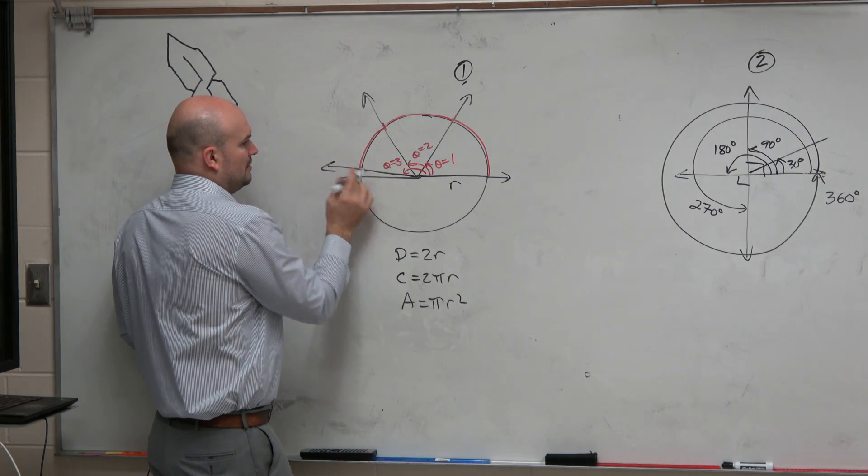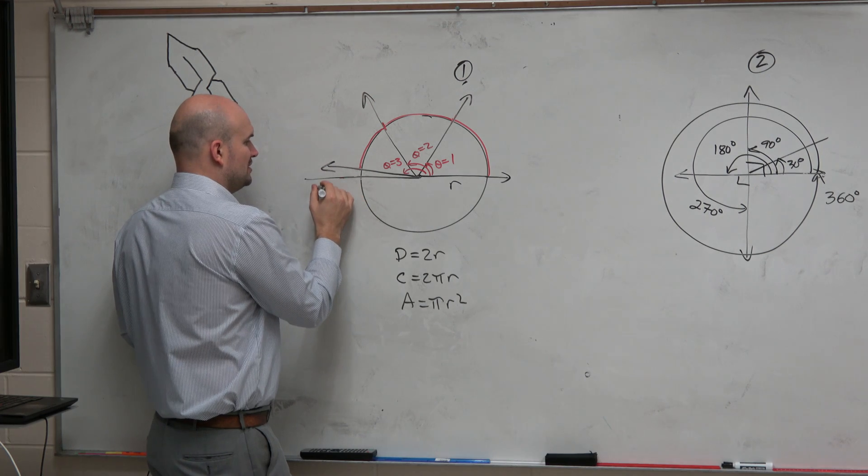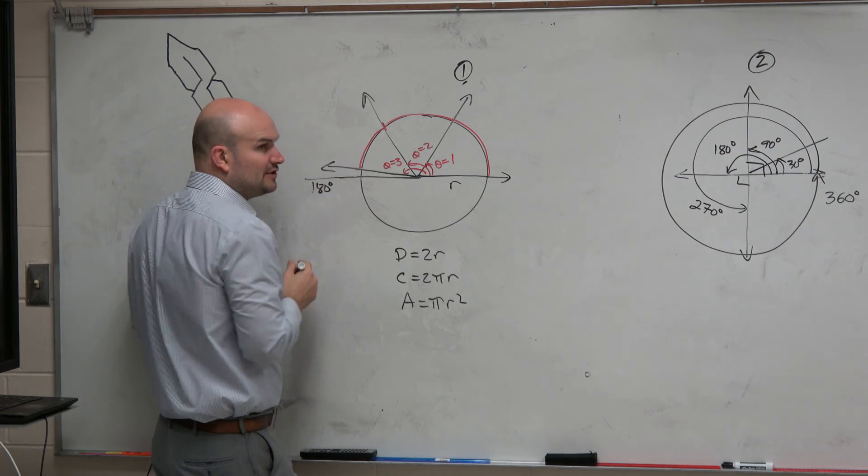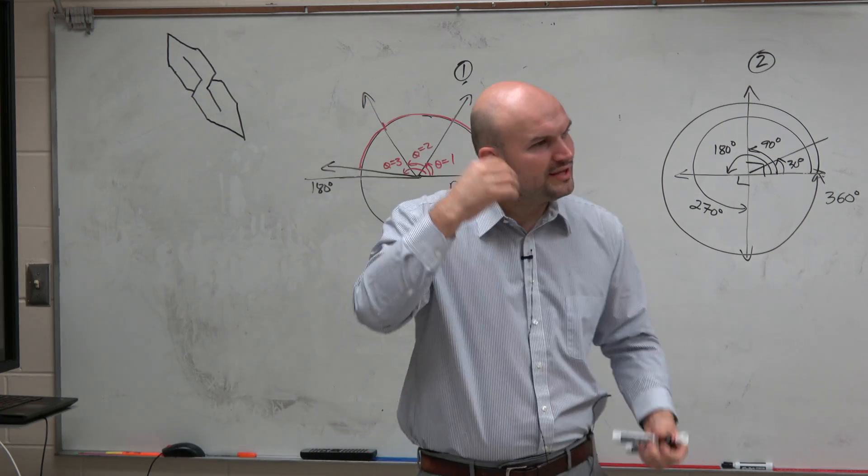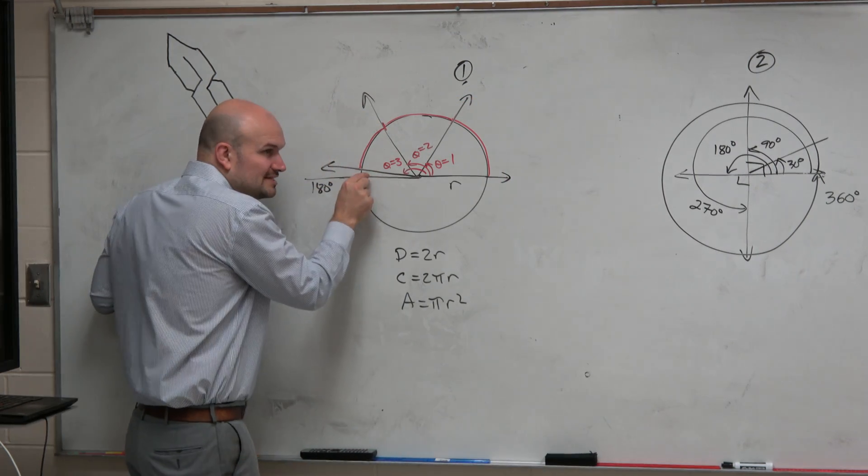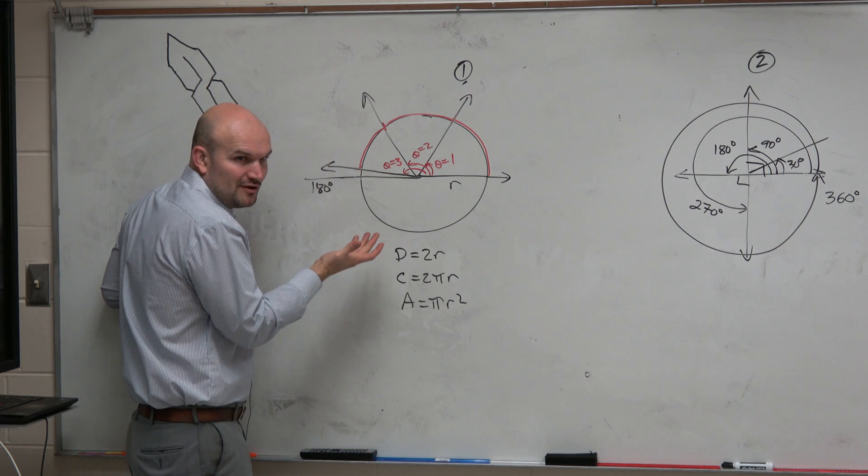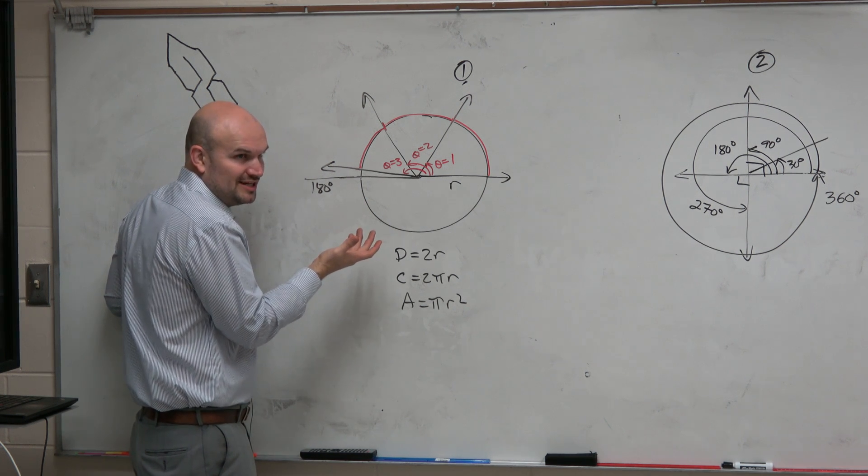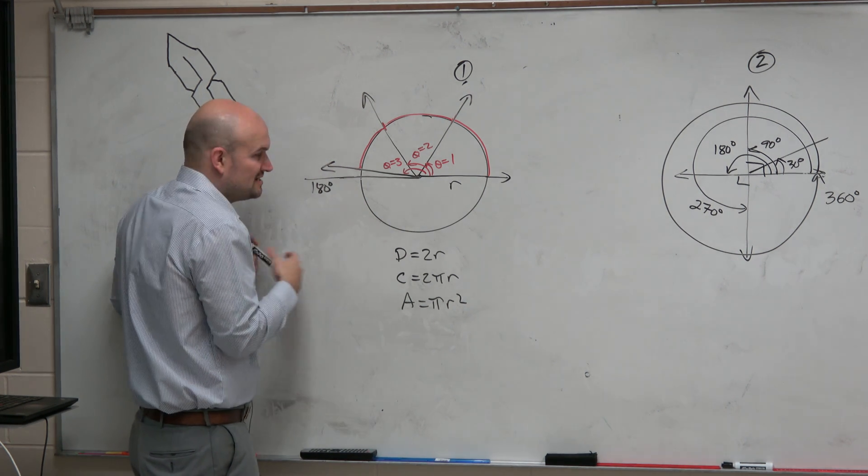So we know that halfway around a circle is 180 degrees. So now we got to think about, well, then how many radians is it? It's three radians plus this little fractional part, which maybe many of you are familiar with, which represents as pi.